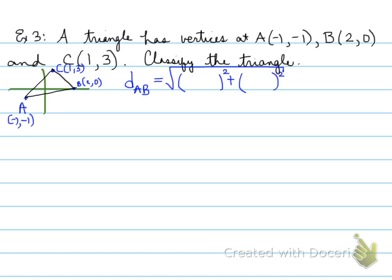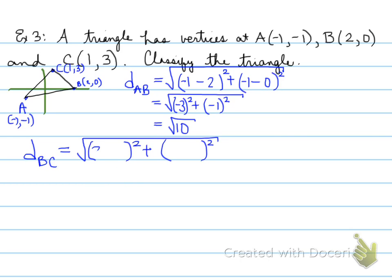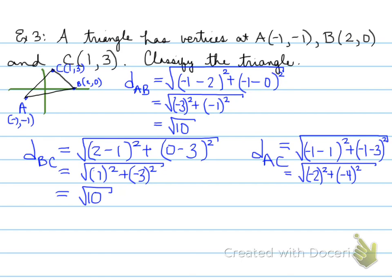We calculate the distance from A to B, plug the coordinates into the formula, and find it equals root 10. Then the distance from B to C: plug in the coordinates, (-1 - 2) is -3 squared, (-1 - 0) is -1 squared, giving 9 plus 1 equals root 10. Then the distance from A to C equals root 20. So AB equals BC, which means it's isosceles — or possibly equilateral — but not scalene.